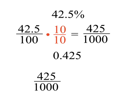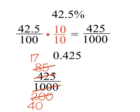And now let's put it as a fraction in lowest terms. We'll divide the numerator and the denominator both by 5 to get 85 two-hundredths. We'll do that again to get 17 fortieths, and that's our fraction. 17 fortieths is the same as 42.5%.